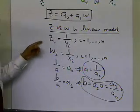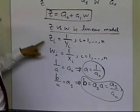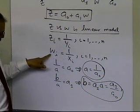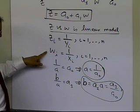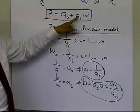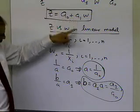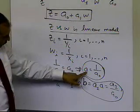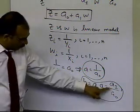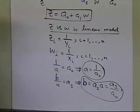So the procedure here is to invert your y values to get your z values, invert your x values to get your w values, do the linear regression of z versus w, you'll be able to find out what a0 and a1 are, and once you have found a0 and a1, you can find your constants of the original model, a, by inverting a0, and then b is simply a1 divided by a0. And that's how we're going to do the saturation and growth model.